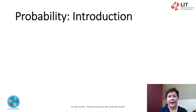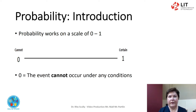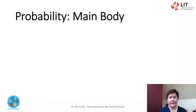Whenever we are unsure about the outcome of an event, we talk about the probability of certain outcomes — how likely they are to occur. Probability is the numerical description of how likely something is to occur, or how likely a suggestion is true. Probability works on a scale of 0 to 1: 0 means the event cannot occur under any conditions, and 1 means the event is certain to occur. Probability can be shown on the probability line. Probability does not tell us exactly what will occur — it is just a guide.